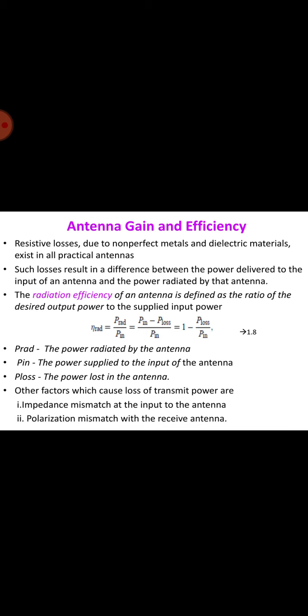Where P radians is the power radiated by the antenna, P in is the power supplied to the input of the antenna, and P loss is the power lost in the antenna. The other two factors which cause loss of transmit power are impedance mismatch at the input of the antenna and polarization mismatch of the receive antenna.